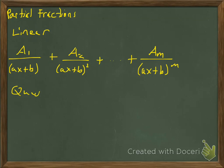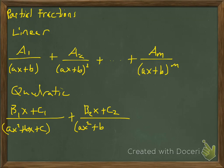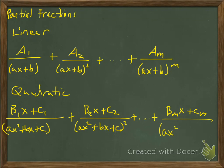If we have a quadratic factor, it's similar to the linear case except we'll have two things in the numerator. So we'll have b₁x plus c₁ over our quadratic factor ax²+bx+c, which we couldn't factor further. If it appears a second time, we add b₂x+c₂ over (ax²+bx+c)². If it appears m times, we keep going all the way to bₘx+cₘ over (ax²+bx+c)^m.